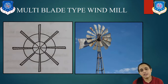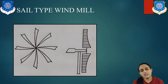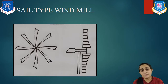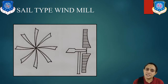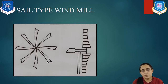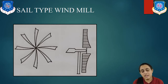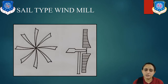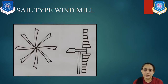Now let us study the sail type windmill. As you see, the sail type windmill uses a cloth-type material attached to it. The blade surface is made from wooden strips or iron strips covered by nylon or polyester cloth — just like a sailor sails a boat, where the cloth material moves the boat. The rotation is nearly 60 to 80 RPM, and this windmill is used for various applications like water pumping and electric power generation.